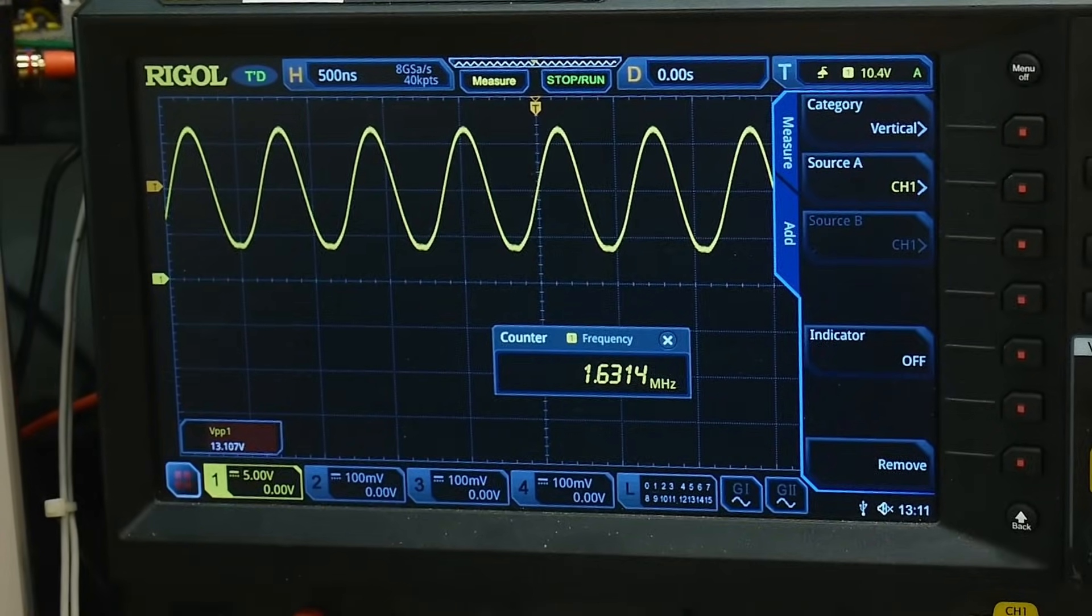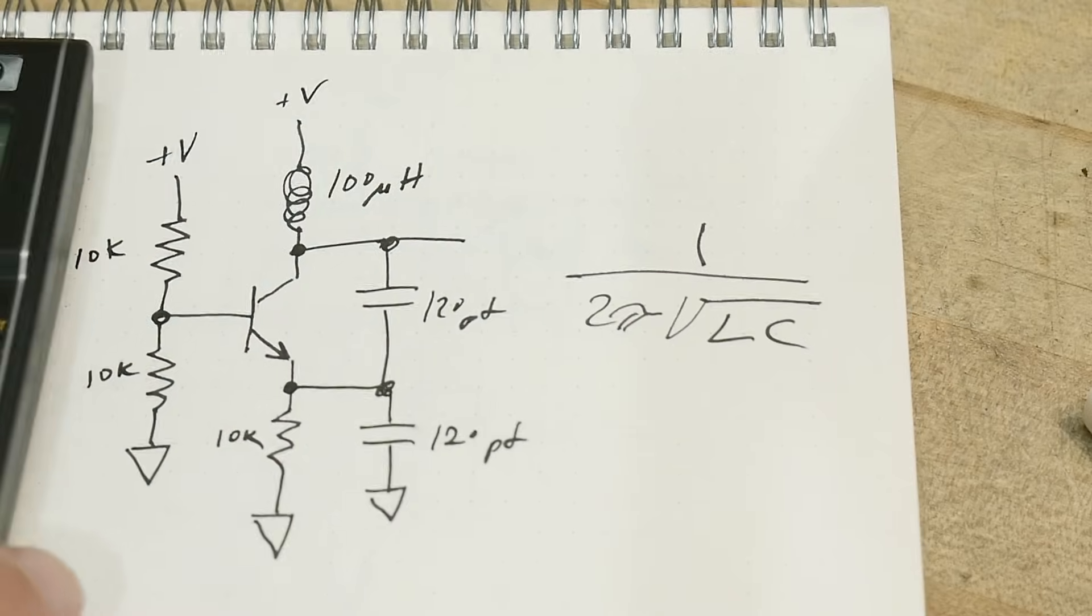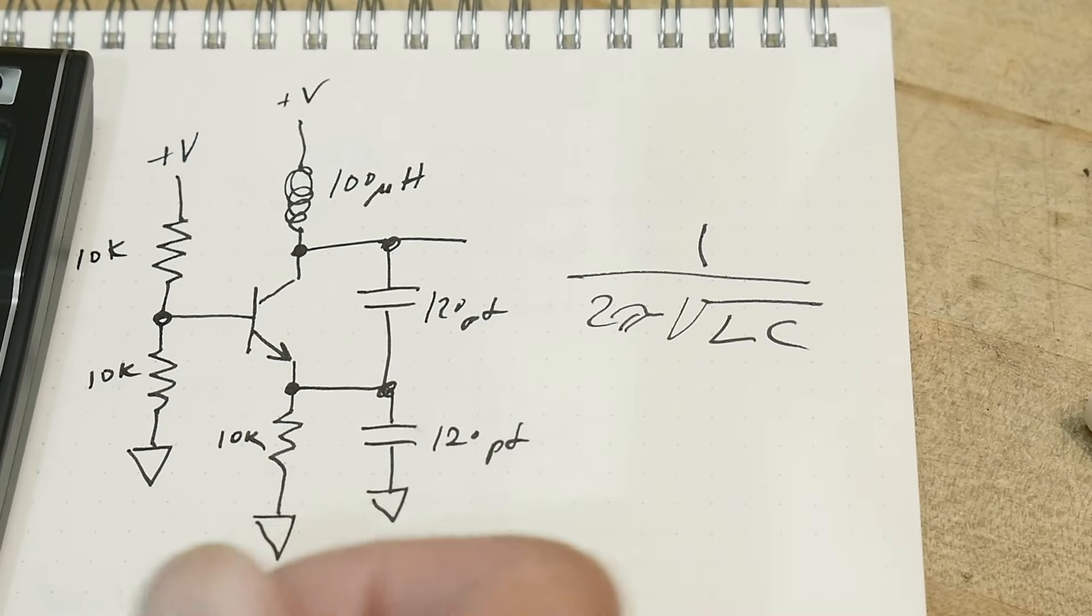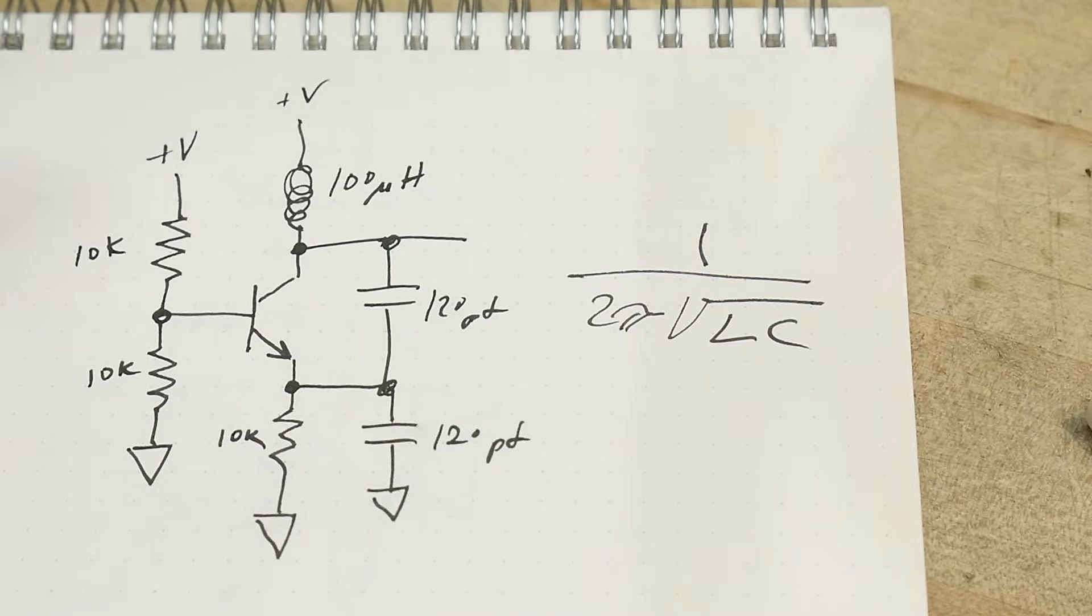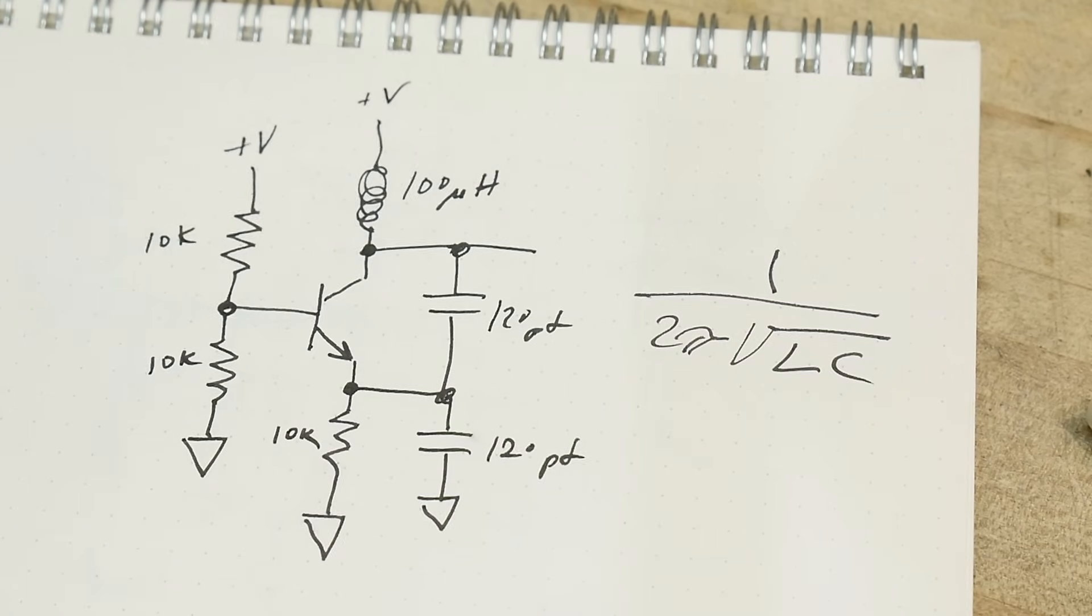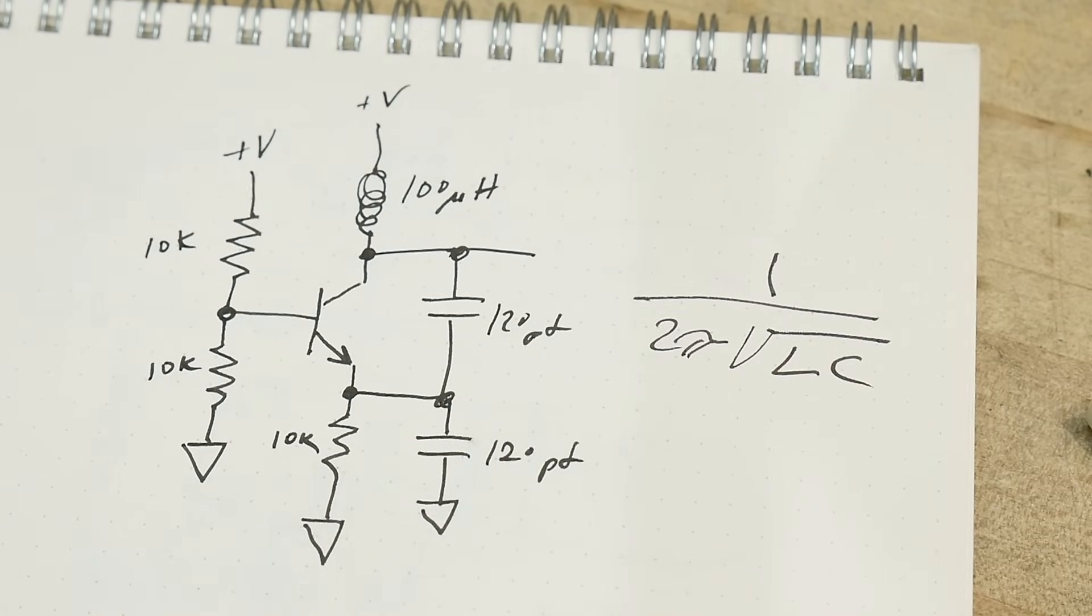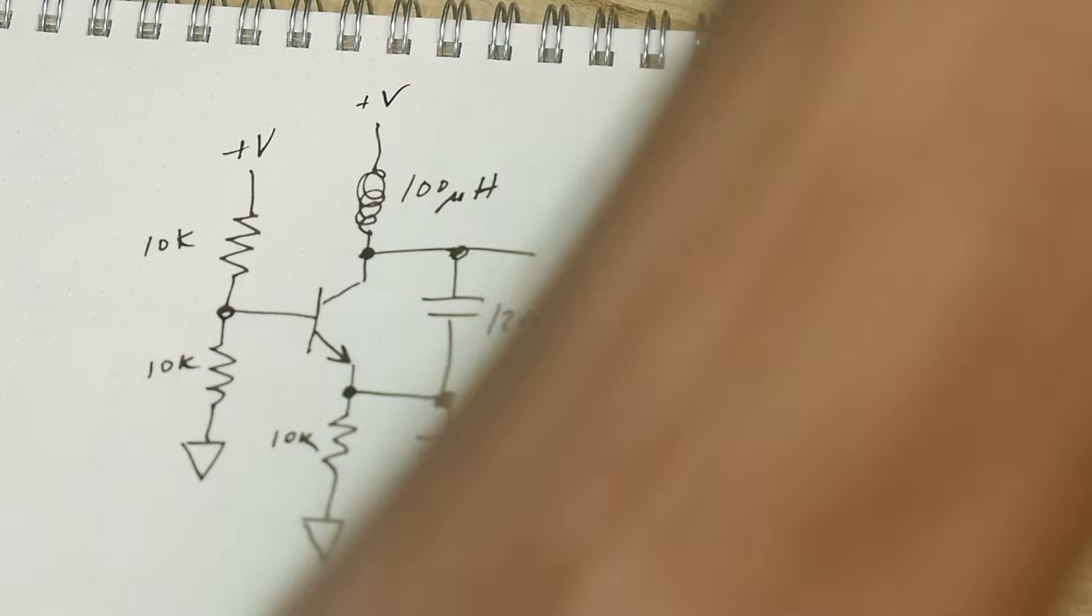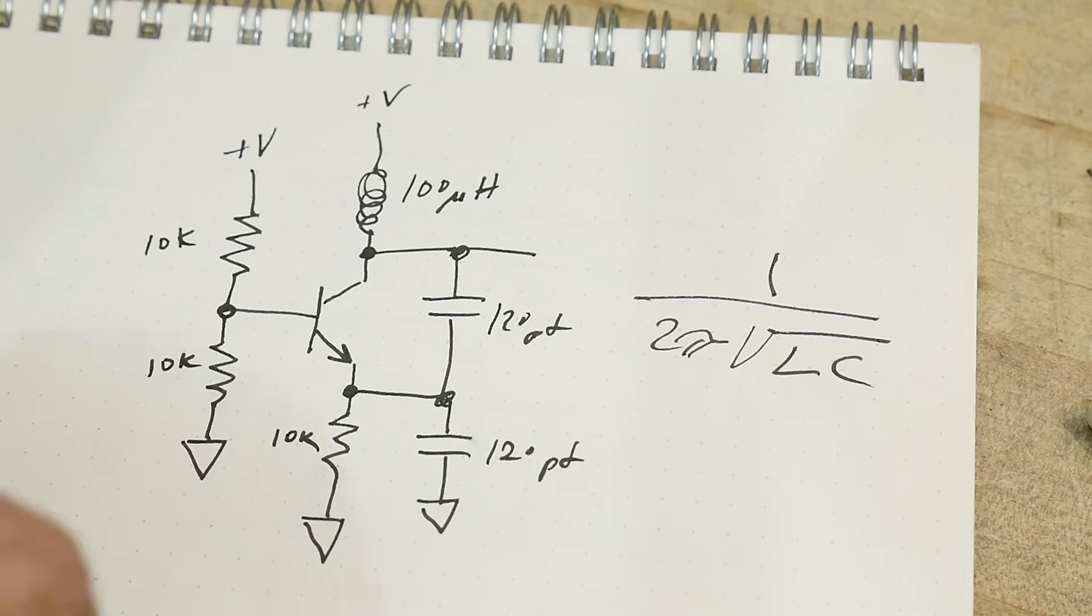It's about 100 picofarads total. I'm not quite sure where the 100 picofarads comes from in the equation here, but that's what we got going. I could add the capacitor here on the base, which you will see most of the circuits have, and that's probably a good thing to have.